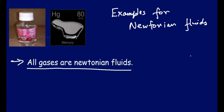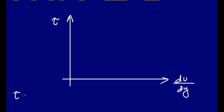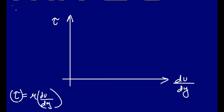Now let's do a plot. On the y-axis we plot tau, and on the x-axis we have du/dy, which is the velocity gradient. For Newtonian fluids, which follow Newton's law of viscosity tau equals to mu times du/dy, if we plot tau versus du/dy we get a straight line which passes through the origin. So we obtain this yellow line for Newtonian fluids.